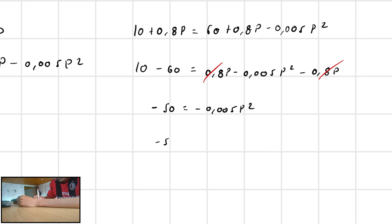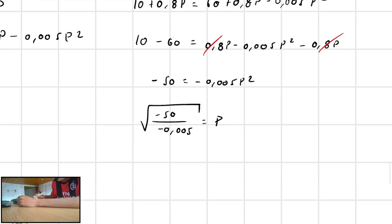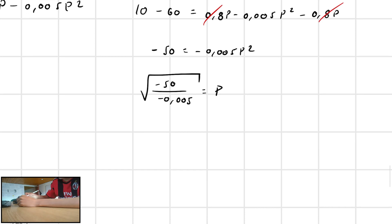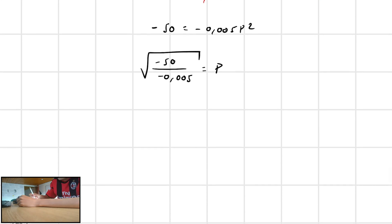Now, minus 50 divided by minus 0.005 is going to be equal to P squared. That means that this is equal to P.